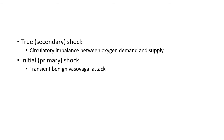The type of shock we are going to discuss today is called true or secondary shock, in which there is circulatory imbalance between oxygen demand and supply. But there is another thing called initial or primary shock, which is a transient and benign vasovagal attack in which there is sudden reduction of venous return to the heart due to neurogenic vasodilation and peripheral pooling of blood.